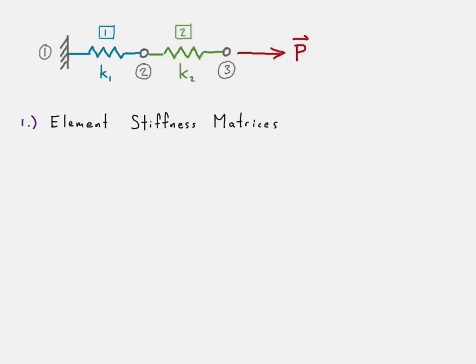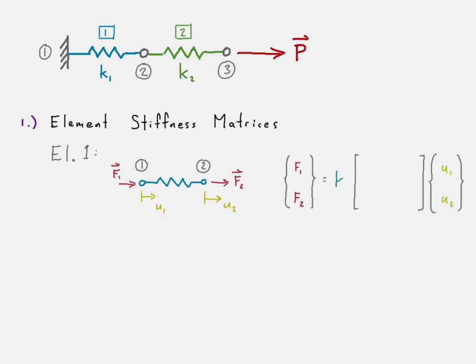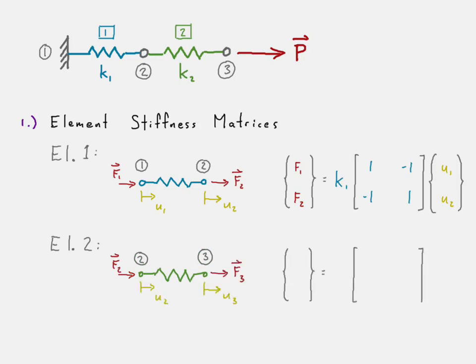There's our structure. We're going to first look at our elemental stiffness matrices. Here's element one. We say that we have the force at node one, force at node two, and our displacements at nodes one and two. There's our elemental stiffness matrix equation for element one. We have the same type of thing for element two, except it connects nodes two and three, and it has a slightly different stiffness — or maybe the same stiffness. That's our stiffness matrix for element two.